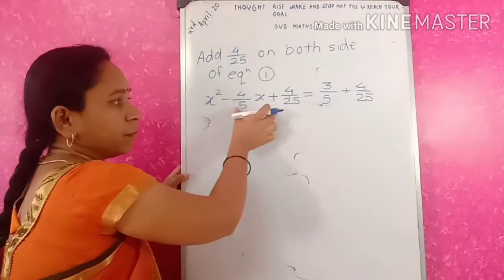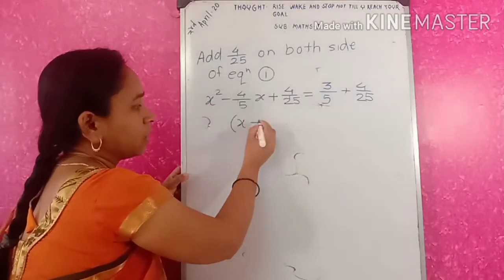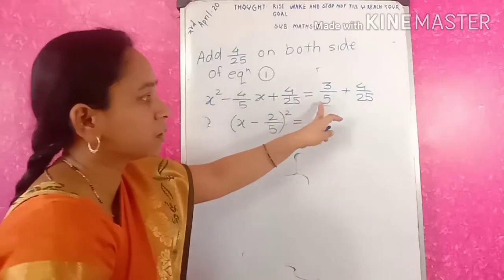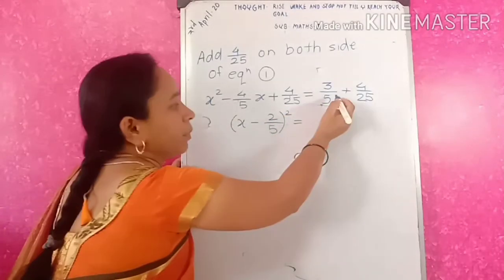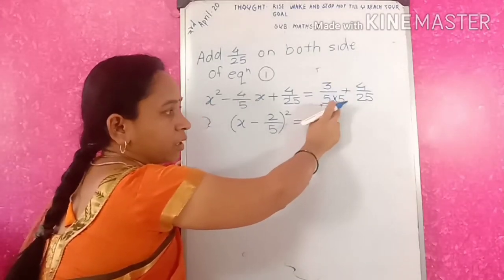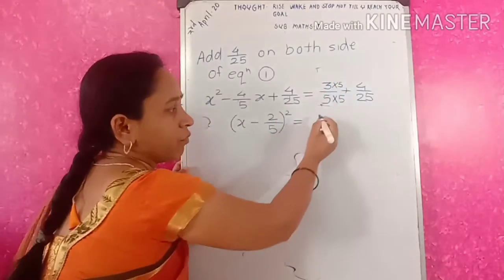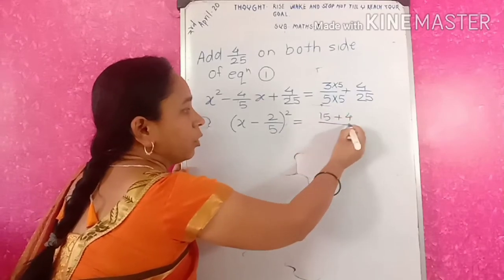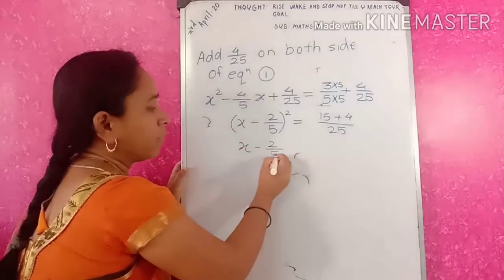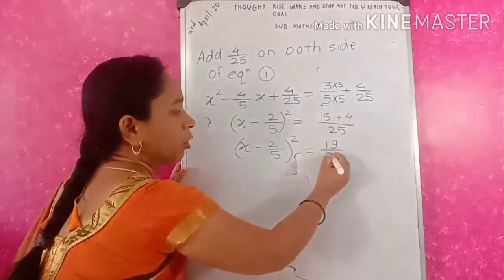This gives us the perfect square (x minus 2/5) squared on the LHS. On the RHS, the denominators are not the same, so we make them equal by multiplying 3/5 by 5/5 to get 15/25, giving 15/25 plus 4/25. So (x minus 2/5)² equals 19/25.